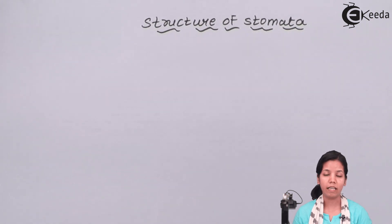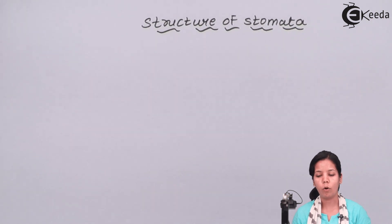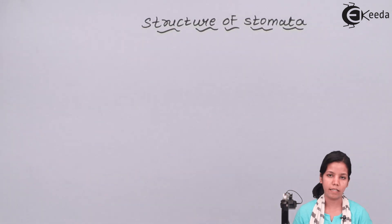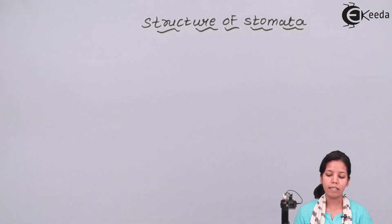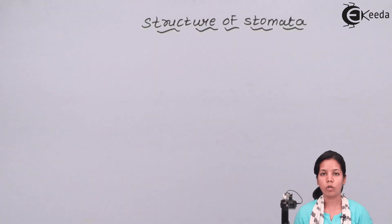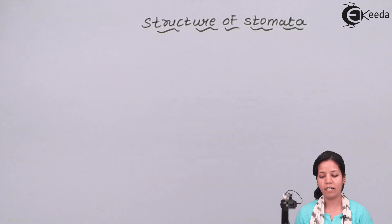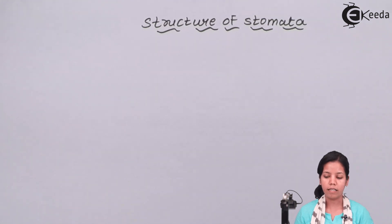Each stoma is basically surrounded by two small distinct epidermal cells which are called guard cells. In monocots and dicots, guard cells are different. In dicots the guard cells are kidney shaped, whereas in monocots the guard cells are dumbbell shaped.